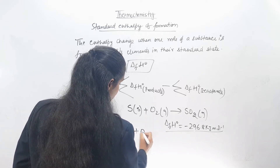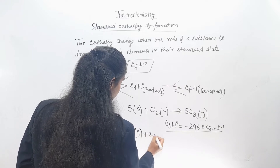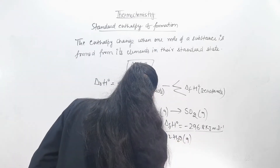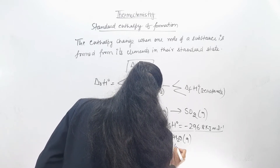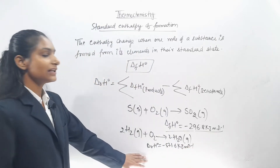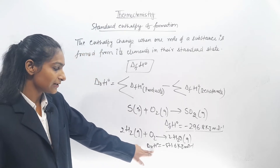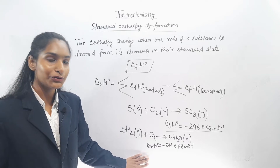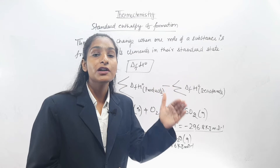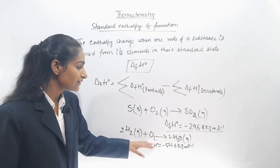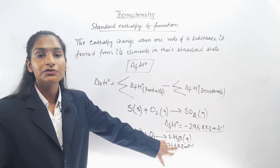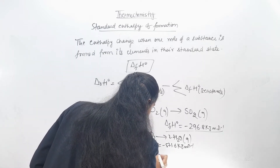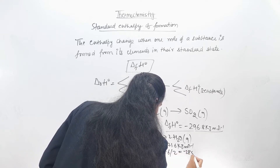In this reaction: 2H2 plus O2 gas gives 2H2O. For this reaction the enthalpy of reaction ΔrH° is equal to minus 571.6 kilojoule per mole. However, since we have 2 moles of water formed but the definition requires 1 mole, we divide by 2: minus 571.6 divided by 2 gives minus 285.8 kilojoule per mole.